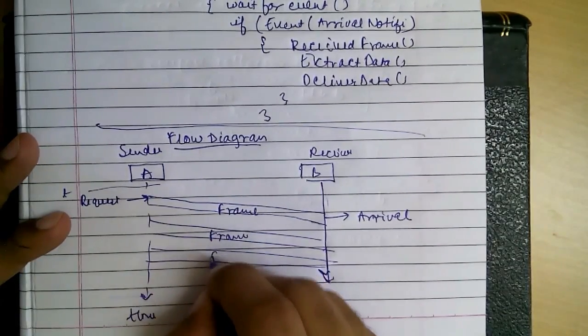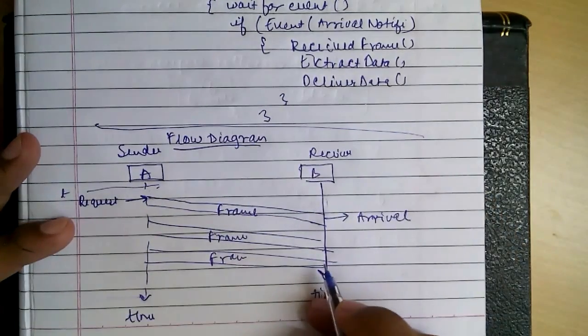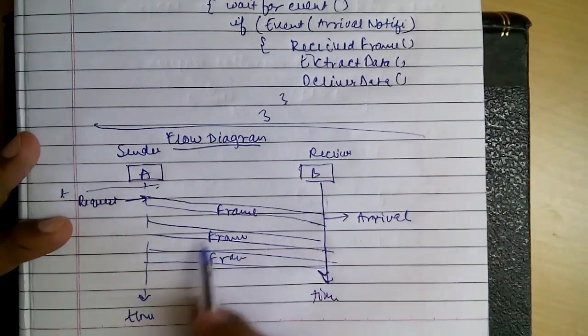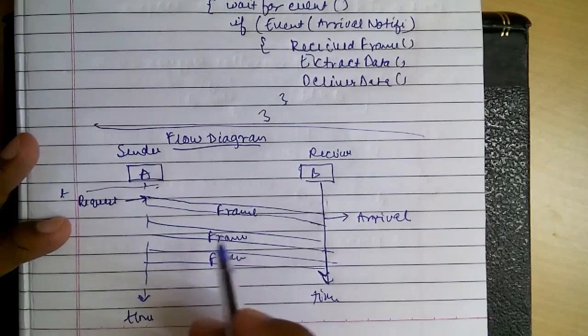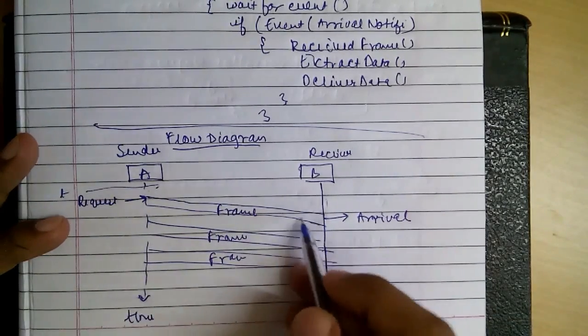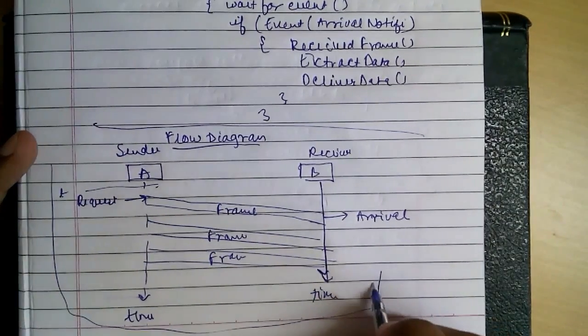So, it is the simplest protocol. The sender can send as many frames. The receiver will receive them. There is no error control. No acknowledgement by the receiver that if the frame is destroyed or something. But the receiver just receives it. So, that's why it is the simplest protocol.